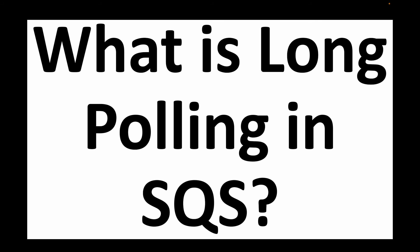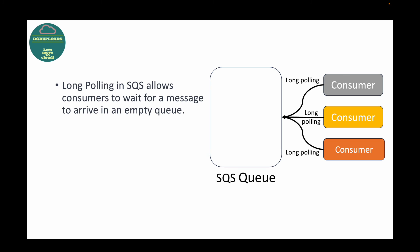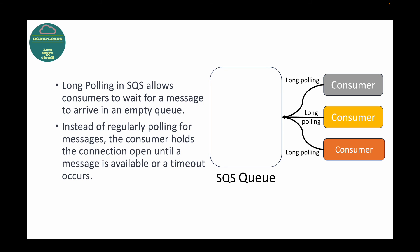The next question is: what is long polling in SQS? There are two types of polling — short polling and long polling. With long polling, when a consumer connects to the queue and there are no messages, the consumer waits for a message to arrive instead of immediately returning empty. The consumer holds the connection open until a message is available or a timeout occurs. This saves money by reducing unnecessary empty responses.